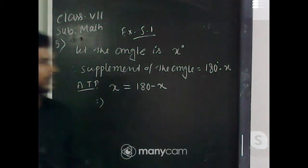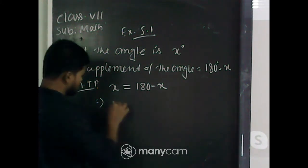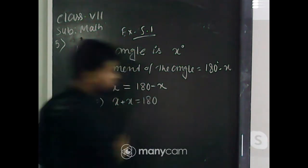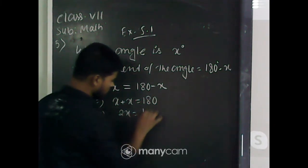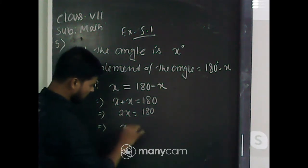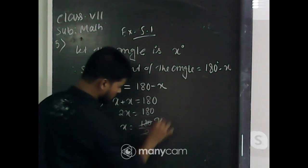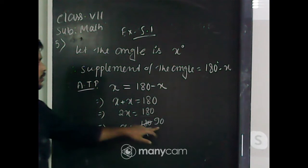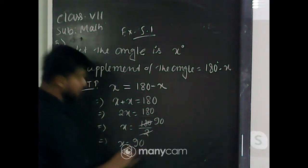This is a simple linear equation. We have to solve it. That means x plus x is equal to 180. That means x is equal to 180 degrees divided by 2, so the value of x is equal to 90 degrees.